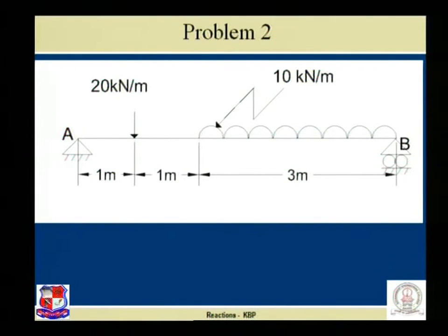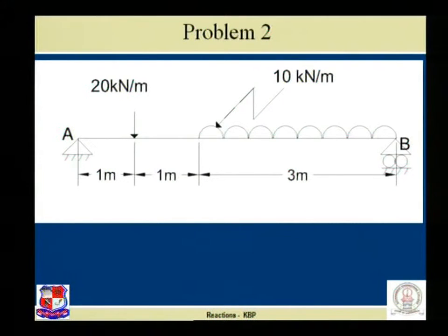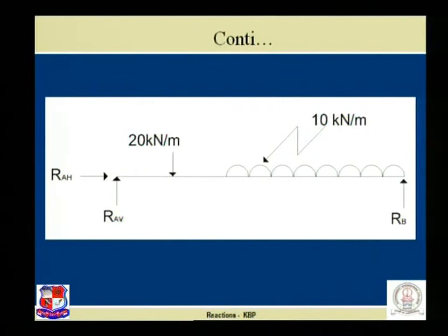Let us start with the given beam for problem two. Which kind of beam is given here? It is a simply supported beam — because one end is a hinge and the other end is a roller. This beam is simply supported with a combination of point load and UDL given. Our intention is to find out the support reactions RAV, RAH, and RB using three equilibrium conditions. Let us draw the free body diagram and solve.